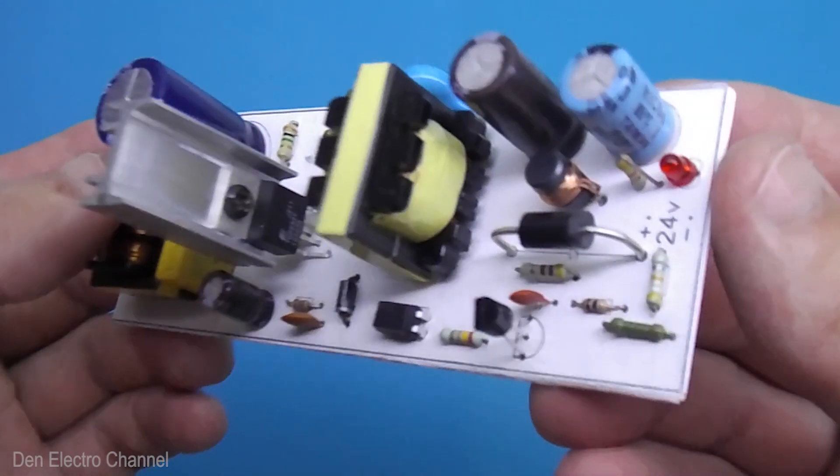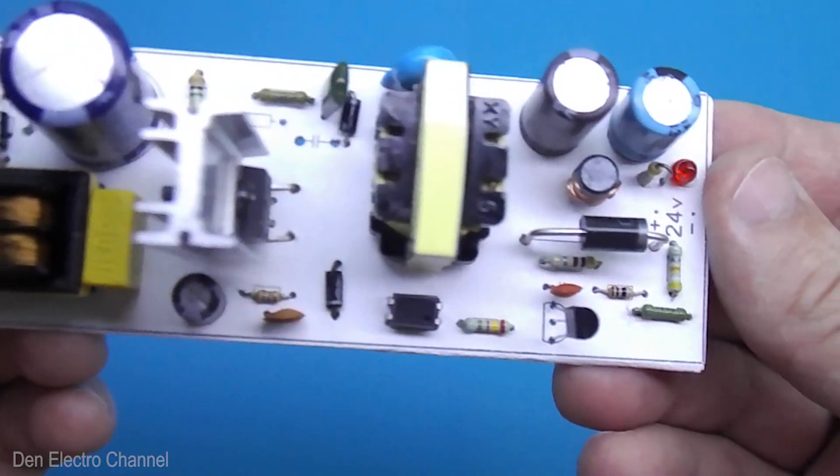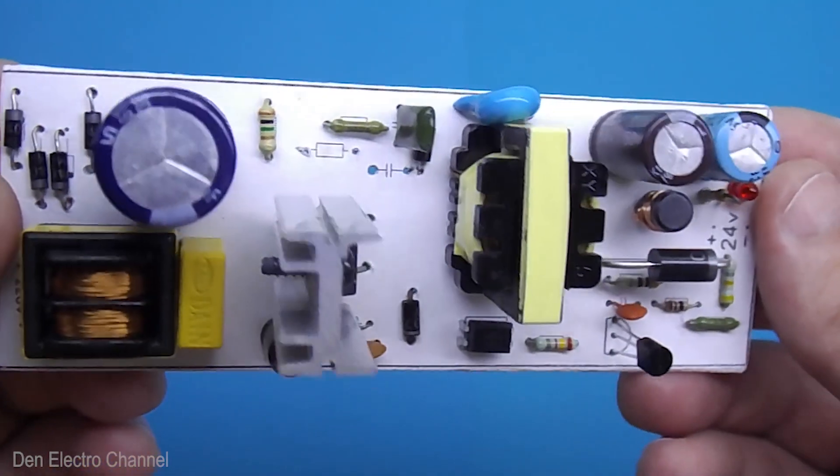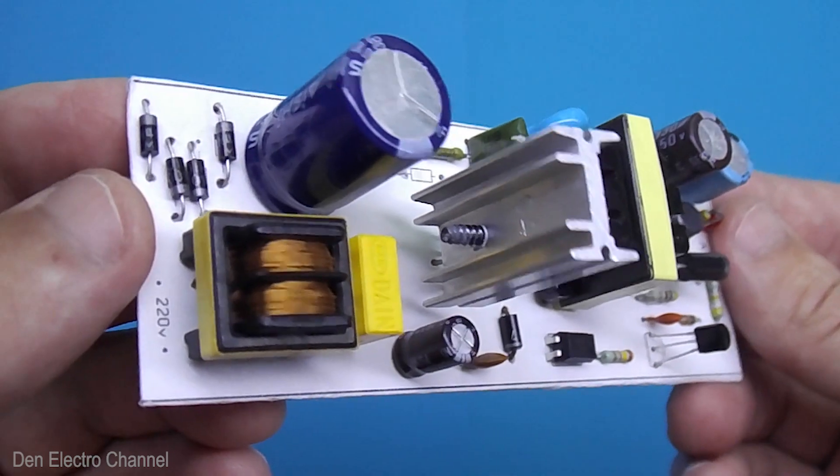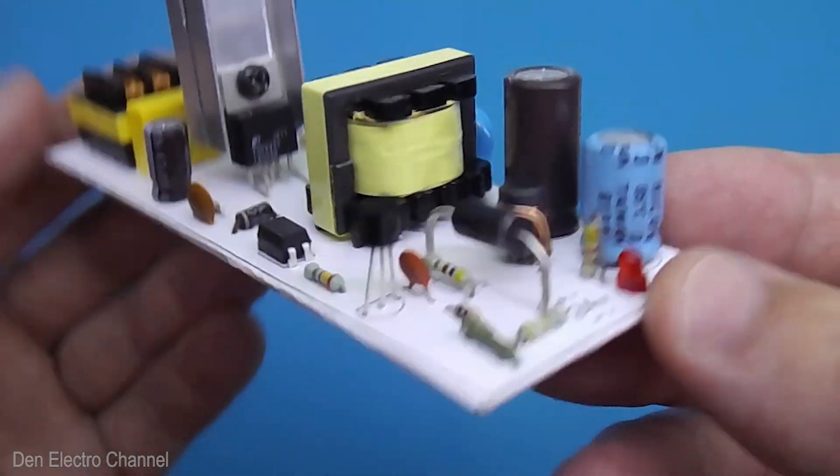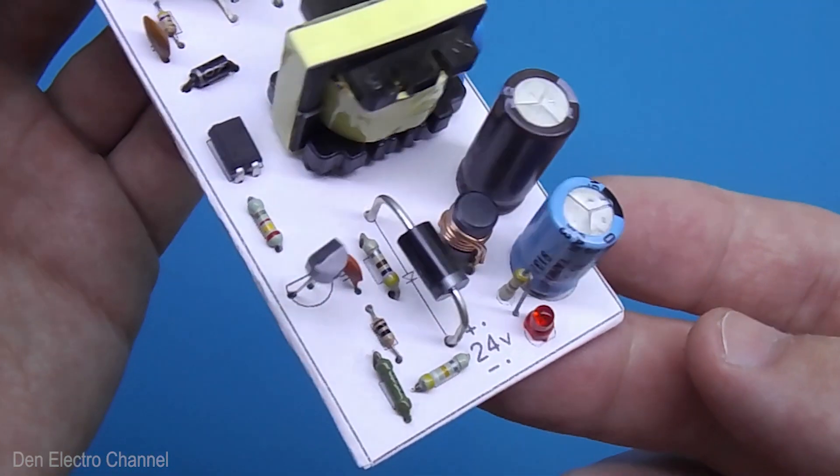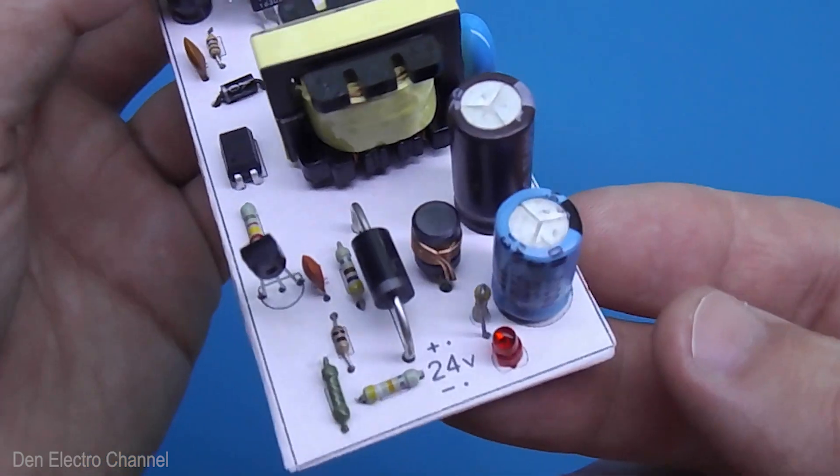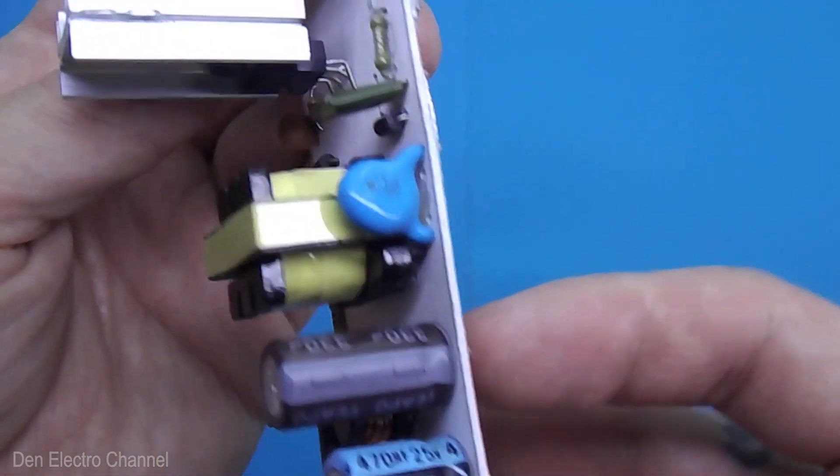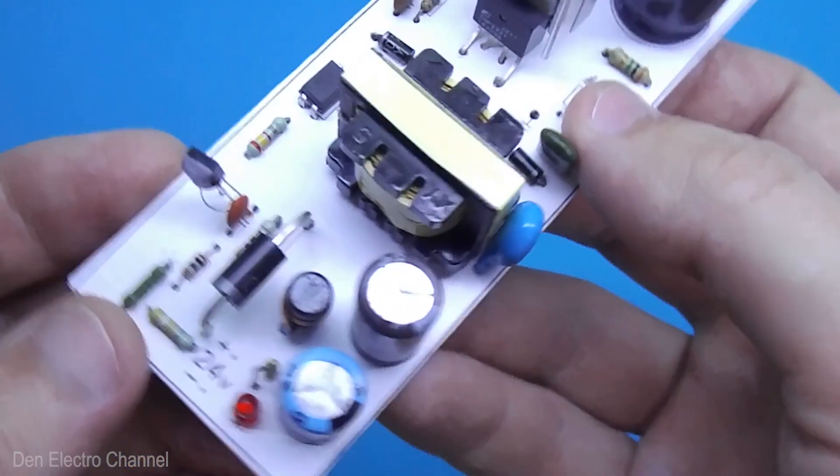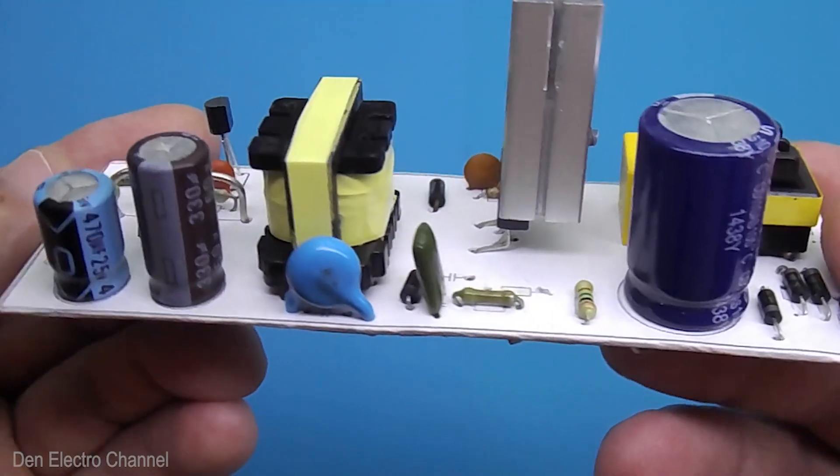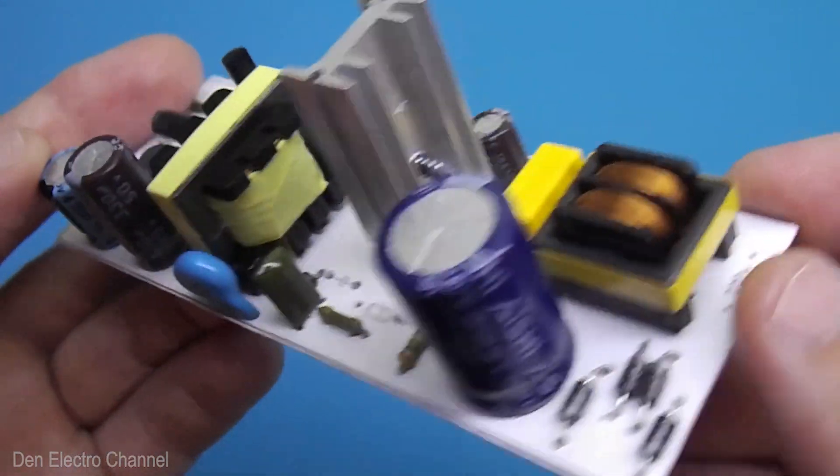When all the parts are installed and connected to each other, you get such a cool device that looks no worse than a factory one. In this version of the board, the blue capacitor ended up being very close to the transformer. In essence, there is nothing terrible about this, but in another version of the layout, I will make the distance between them greater.